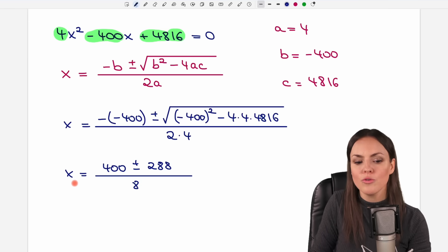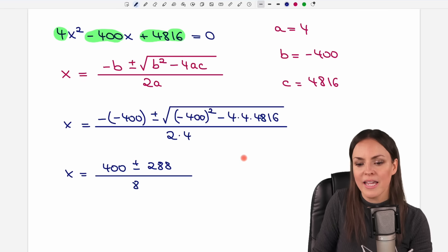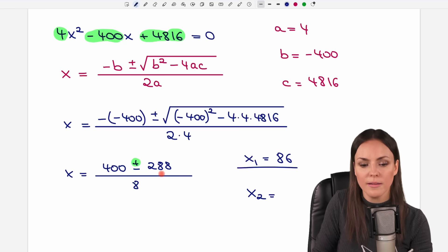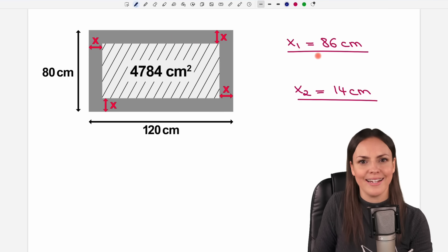So we get two results for our x. Our first result x1 equals 400 plus 288 and we divide it by 8 which equals 86. And the second result we get is 400 minus 288 and we divide it by 8 which gives us 14. So we get two results for our x. I don't like that. I only wanted to have one solution.